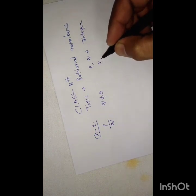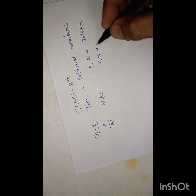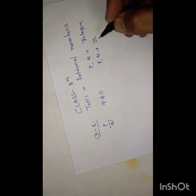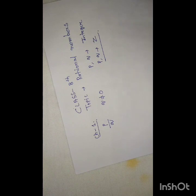P and Q will be members of Z — they should be integers. If P is an integer but Q is not an integer, then P upon Q will not be a rational number.